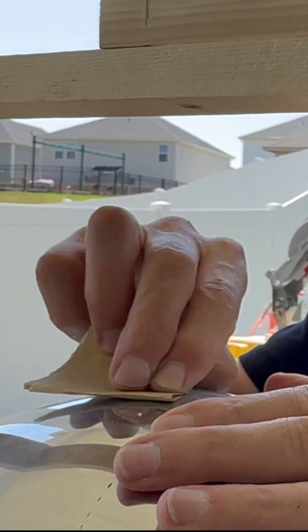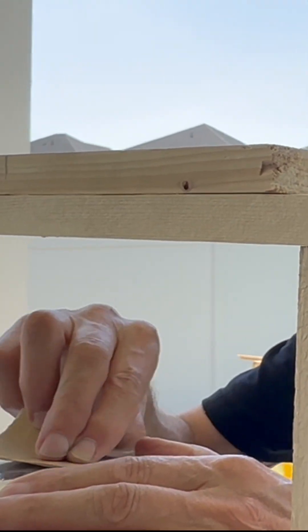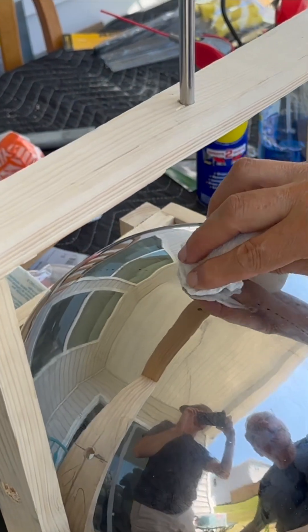But we don't want it shiny where we're going to weld or solder or braze. What is it you're putting on there? Denatured alcohol.